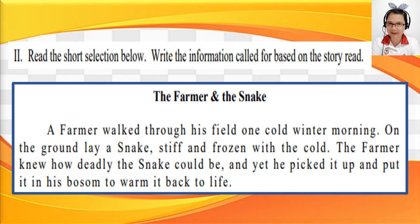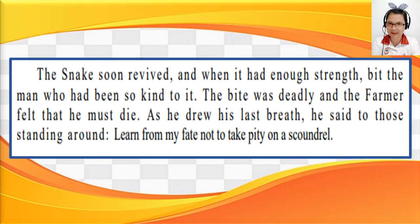Now, let's read the short selection below, then answer orally the information called for based on the story read. The title is The Farmer and the Snake. A farmer walked through his field one cold winter morning. On the ground lay a snake, stiff and frozen with cold. The farmer knew how deadly the snake could be, and yet he picked it up and put it in his bosom to warm it back to life. The snake soon revived, and when it had enough strength, bit the man who had been so kind to it. The bite was deadly, and the farmer felt that he must die. As he drew his last breath, he said to those standing around, 'Learn from my fate, not to take pity on a scoundrel.'